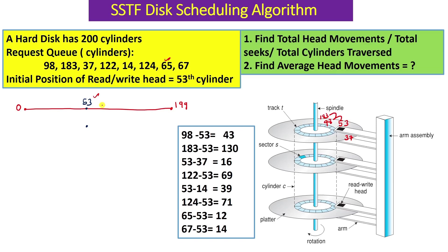So SSTF says: move from 53 to 65, because you have to traverse fewer tracks compared to going to any other cylinder. For example, moving from 53 to 98 requires traversing 43 cylinders, while 65 is only 12 away - it's the closest cylinder. So we move from 53 to 65 first. Now 65 is serviced and we don't need to track it again.